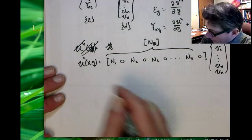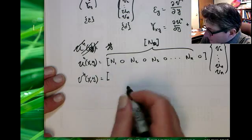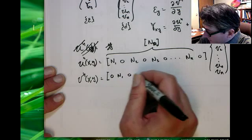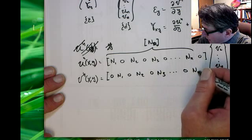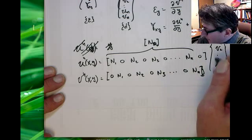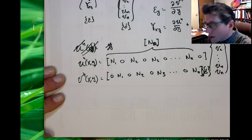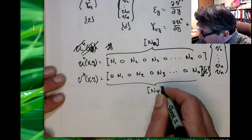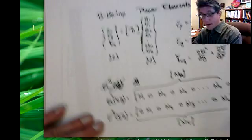Likewise, I can do the same in the y direction. Since we just want to pick out the v values, that's going to be 0, N1, 0, N2, 0, N3, ..., 0, Nn, times the same displacement vector d. We're going to call this one Nv, because that interpolates the y displacement.